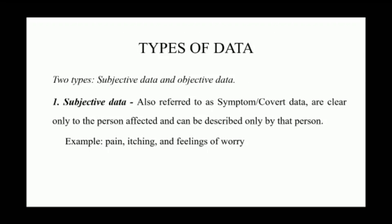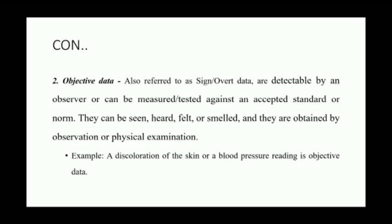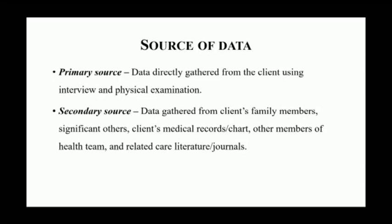There are two types of data: subjective data and objective data. Subjective data, also referred to as symptoms, can only be described by the person affected — for example, a patient saying 'I am in pain.' Objective data, also referred to as signs, are detectable by the observer and can be measured or tested against accepted standard norms. They can be seen, felt, smelled, or heard, and are obtained by observation, physical examination, or lab results such as blood pressure or skin discoloration.